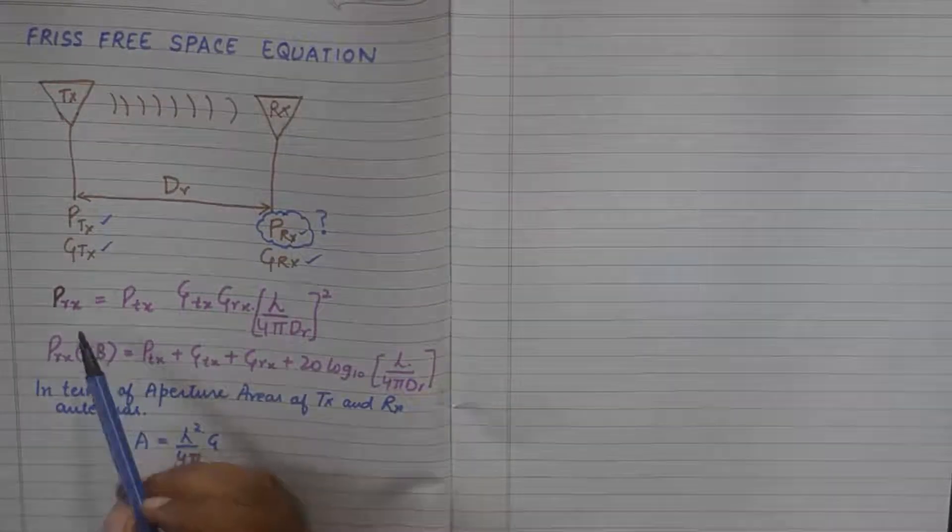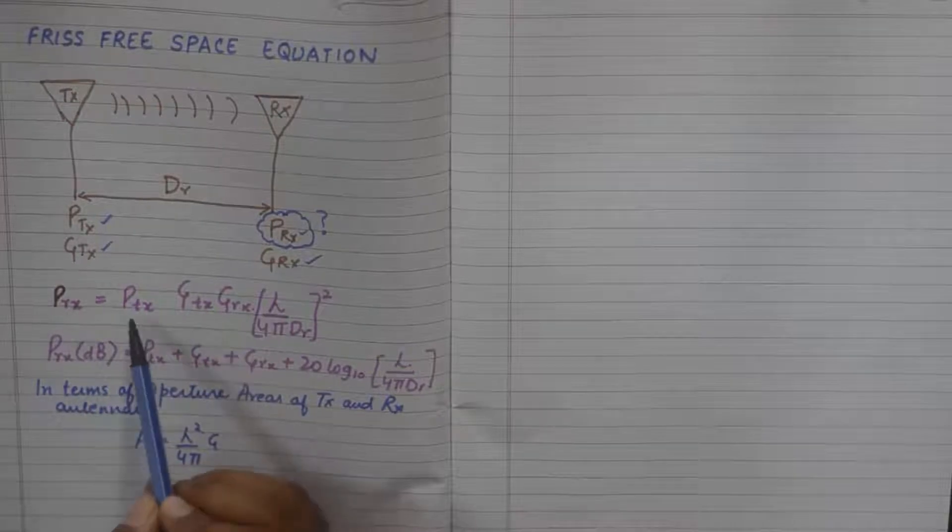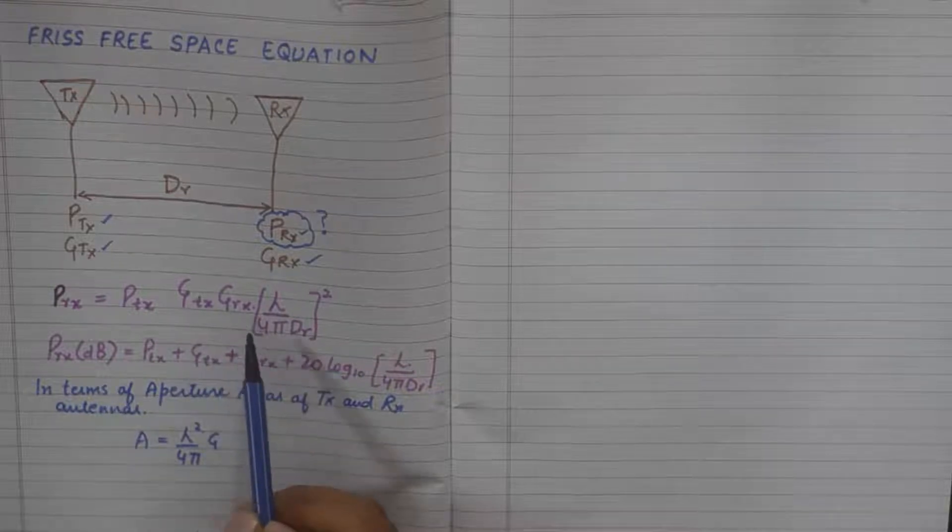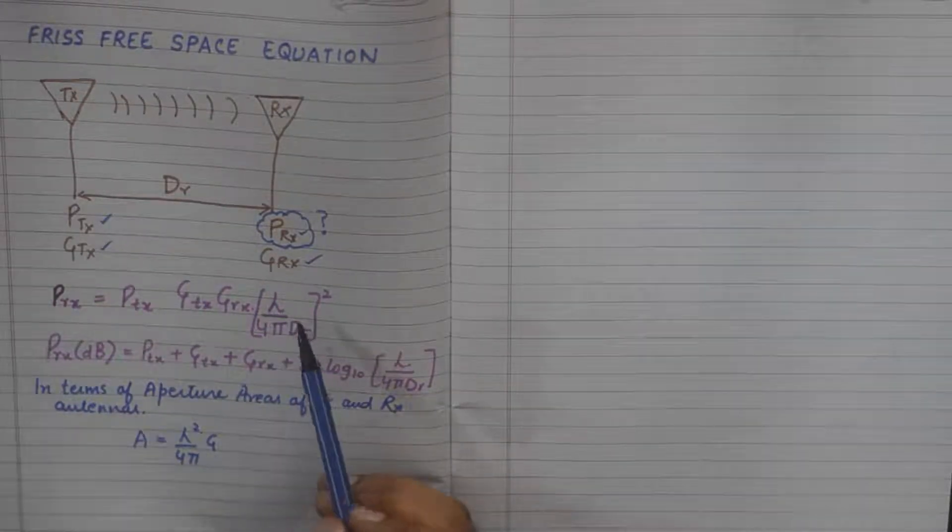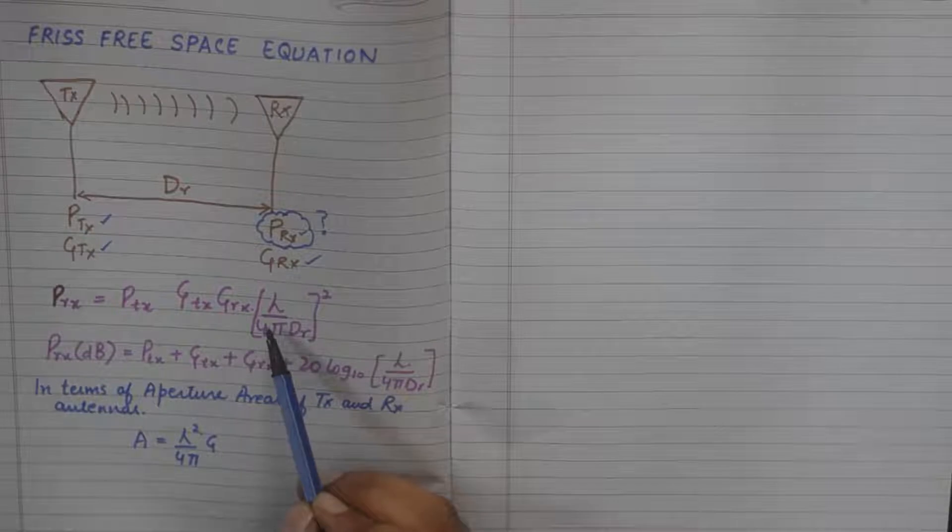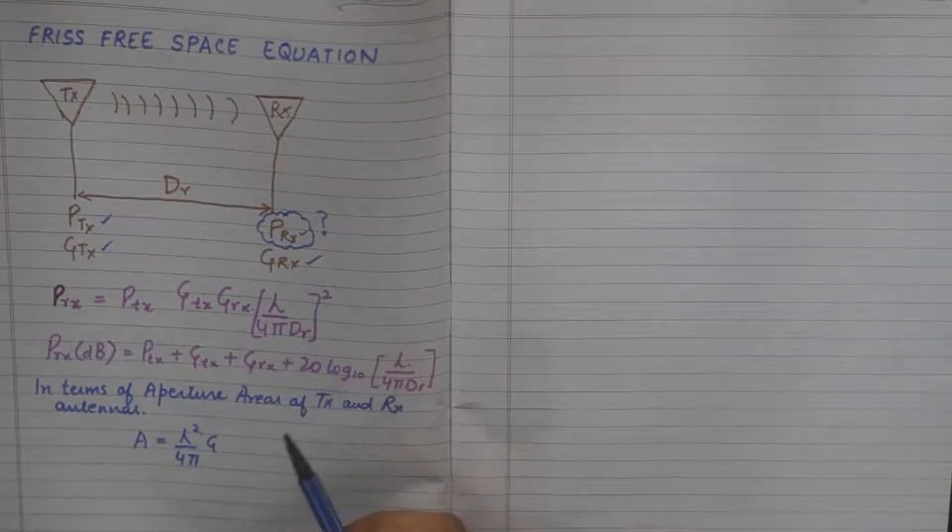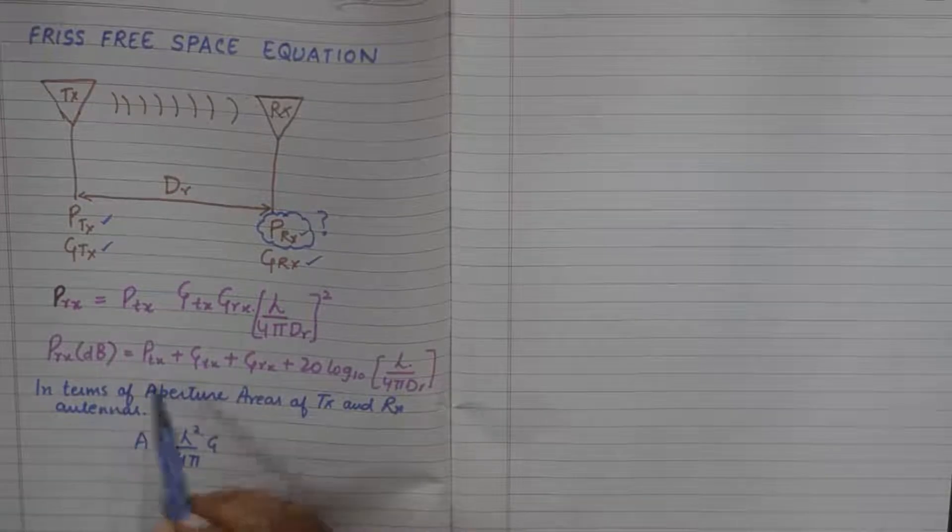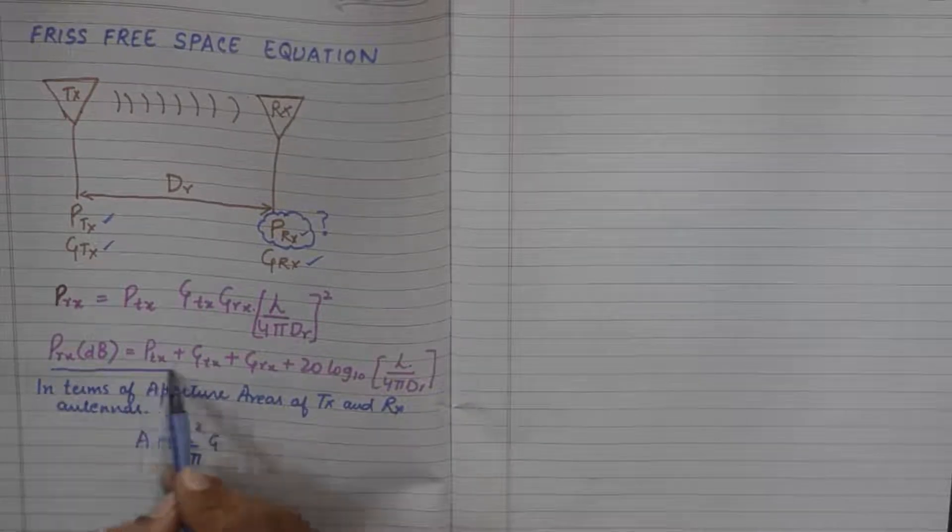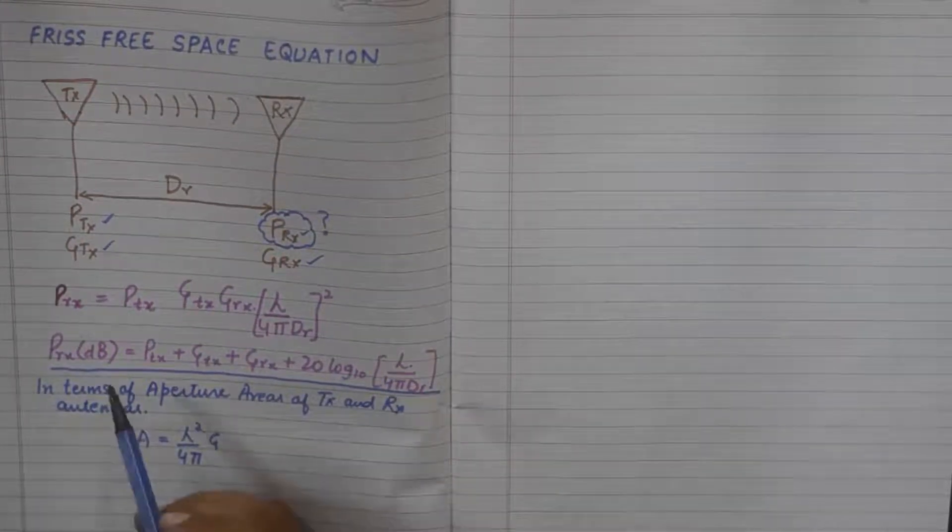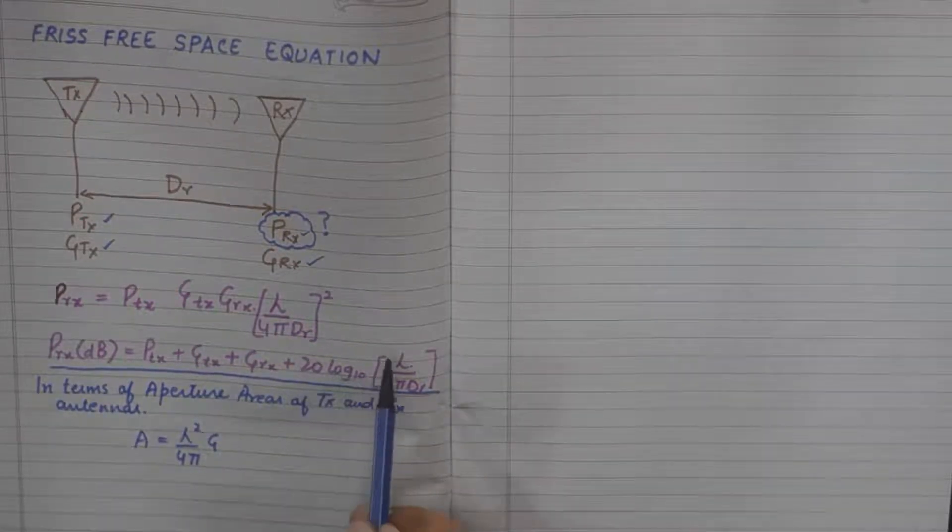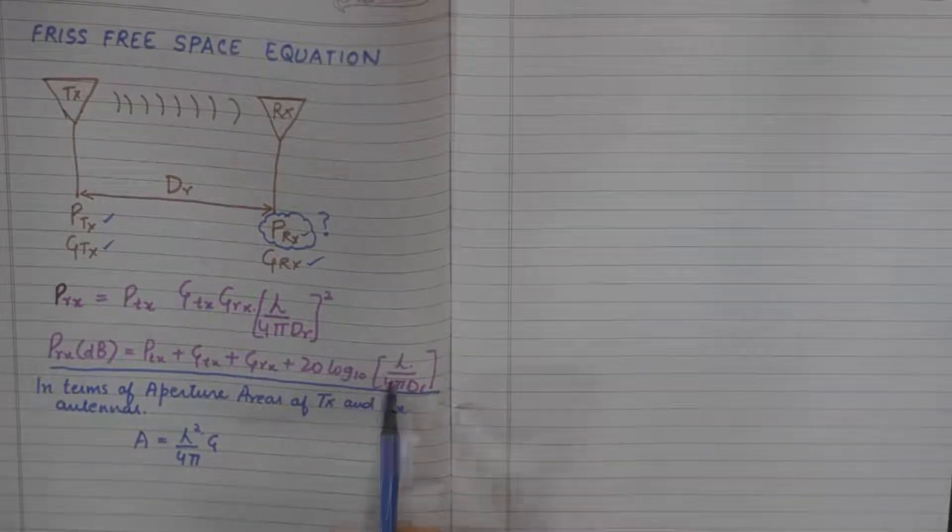So the Friss Free Space Equation is pretty simple. It says that the received power is equivalent to transmitted power multiplied by the gain of both antennas, and then it has this factor. Lambda signifies the wavelength of the transmitting wave upon 4π distance, whole square. In terms of dB, it takes up this form. So if you want to calculate the power in dB, you would need to multiply 20 log₁₀ to this factor.